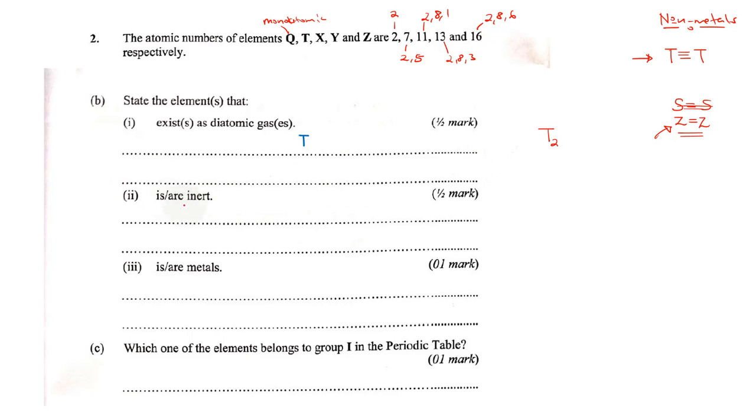Which one is inert? The one that has a completely filled outermost energy level. If you are to remember, we had Q. Q had 2 in the first energy level. We know the first energy level can take a maximum of 2. And this one is in group 8. If we had to correspond it with the periodic table, we shall have it as helium. So the inert element will be Q.